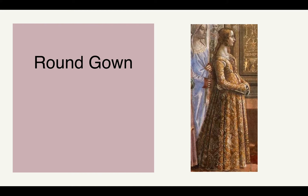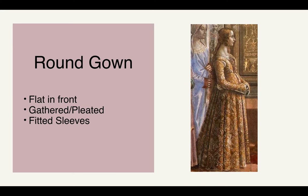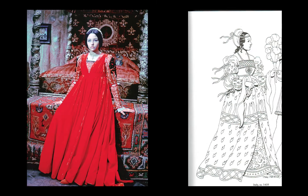The round gown becomes a super important and prominent garment of the period. It has a separately cut bodice with a center front and center back seam. The skirt would be flat and smooth in front and then pleated or gathered in the back, with a lot of fullness in the back. The sleeves are typically narrow, and it has a very high empire waistline hitting right just below the line of the bust. Franco Zeffirelli's Romeo and Juliet has excellent historical costumes if you're looking for examples of early Renaissance.